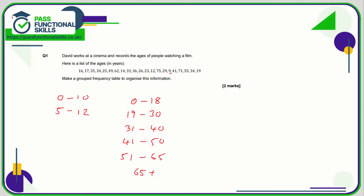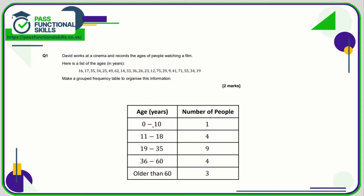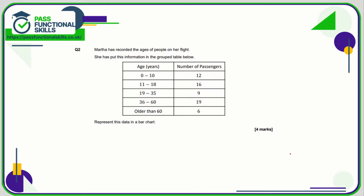It doesn't have to be zero to eighteen, nineteen to thirty — you could do nineteen to twenty-five, it's entirely up to you. In the mark scheme they've used zero to ten, eleven to eighteen, nineteen to thirty-five, thirty-six to sixty. That's a quite big age category, but that's fine because there's only four people in it. The key thing is the age categories don't overlap, and the number of people is correct according to the information given.